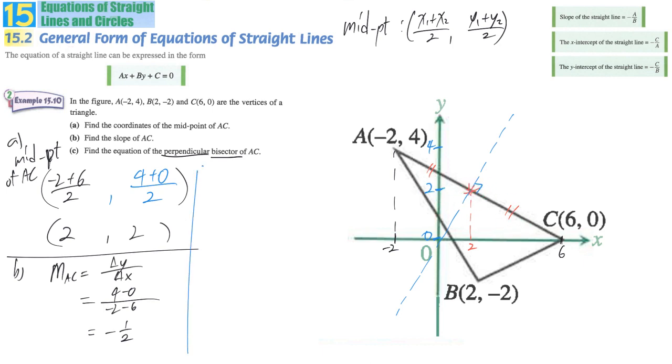To solve this, we already have our point, which is the midpoint of AC (2, 2). And then we want to find out the slope of this line. So we let the slope be M. And at the same time, we know that M_AC is equal to negative 1 over 2. So based on the fact that they are perpendicular to each other.